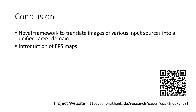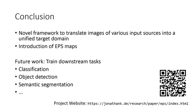In conclusion, we have presented a novel framework capable of translating images from various input sources into a unified target domain. To this end, we introduced EPS maps, which are a compact representation of morphological segmentation. In the future, this framework could be used to improve the training of downstream tasks such as classification, object detection, semantic segmentation, or others, since the generated images have lower complexity compared to the various possible input sources. More details on the method, a thorough evaluation of results, and a discussion of its limitations can be found in our paper.